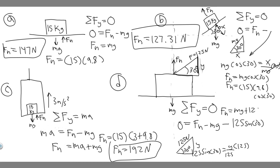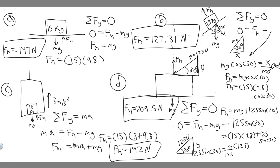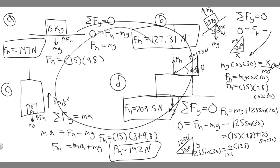So F sub n equals mg plus 125 times sine of 30. Plugging in: 15 times 9.8 plus 125 times sine of 30, which gives 209.5 newtons. To summarize: for Part A Fn = 147 N, Part B Fn = 127.31 N, Part C Fn = 192 N, and Part D Fn = 209.5 N. The key method is always to find the sum of the forces in the y-direction, include F sub n, and solve for it.